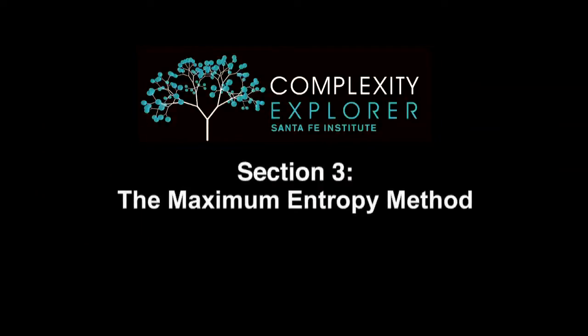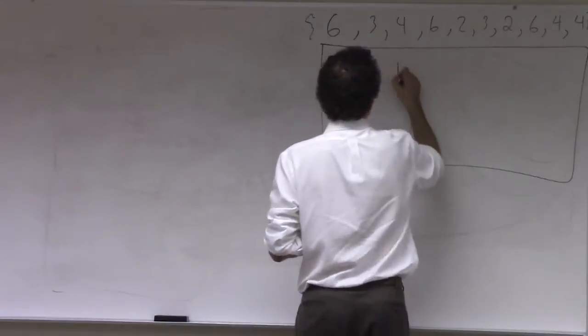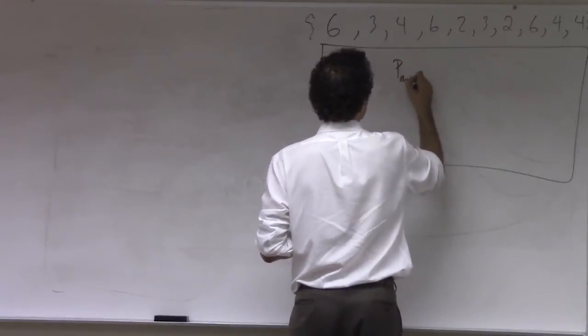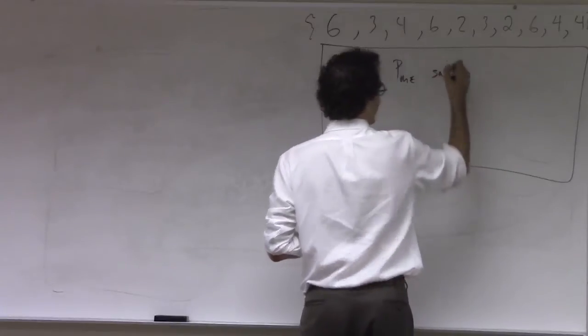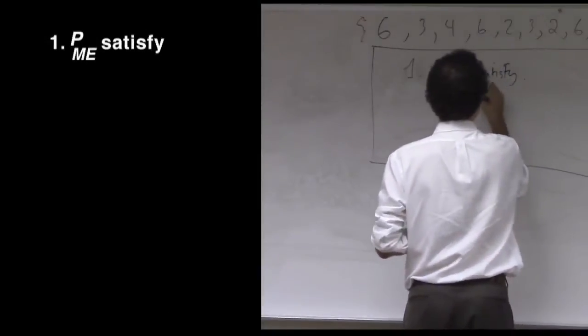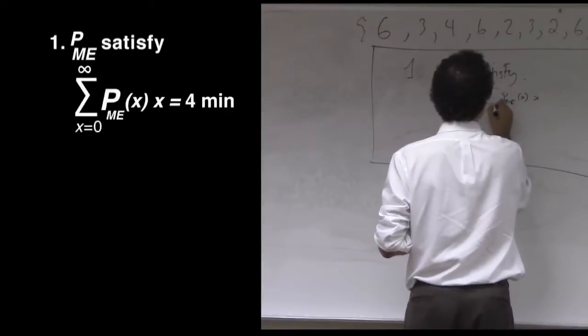We've boiled down our max entropy prescription into two steps. The first thing is we want the probability distribution to satisfy this constraint on the average value of the waiting time.